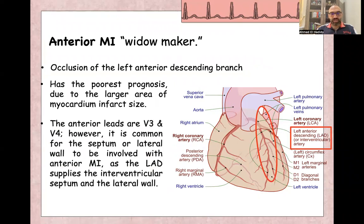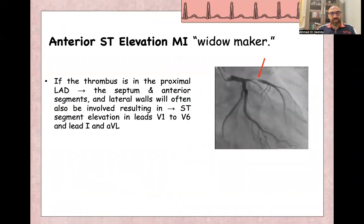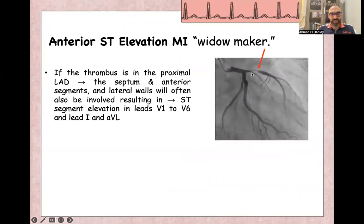As noted, anterior leads are V3 and V4. However, the LAD usually supplies the septum as well as the anterior and lateral wall of the heart, so infarction typically extends from anterior to anterolateral or anteroseptal. If the thrombus is in the proximal LAD, the septum, anterior segment, and lateral wall will all be involved, leading to ST elevation in V1 to V6 and also leads 1 and AVL — this is extensive anterolateral ST elevation myocardial infarction. If the LAD thrombus is in the middle of the artery, this usually gives ST elevation in V3 to V6.